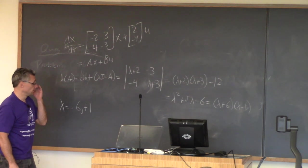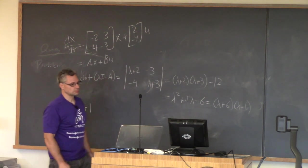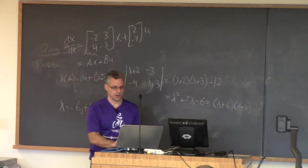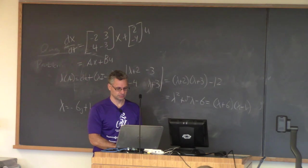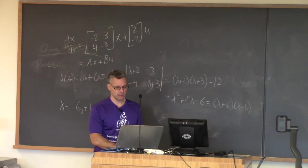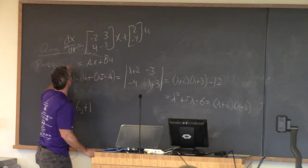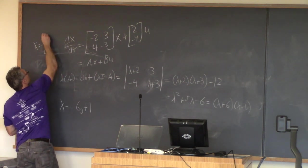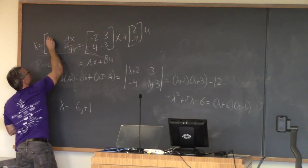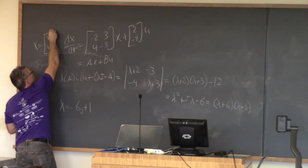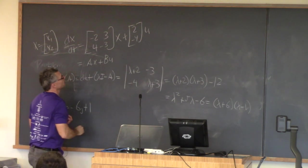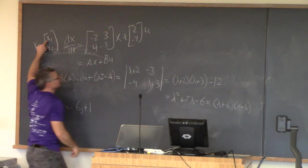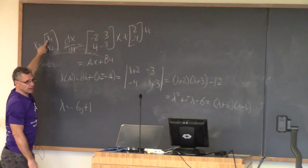So that was part one. Moving along to part two. I asked you to find the transfer function between x1 and u. The vector x has two components called x1 and x2. I'm asking you to find the transfer function with input u and output x1.